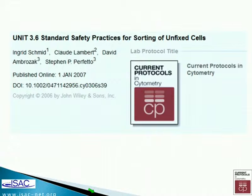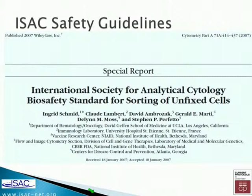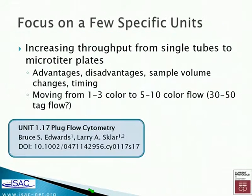Unit 3.6 is very detailed and includes a table identifying the level of safety required when sorting live human cells. You can also go to Cytometry Part A and read the special report published in 2007 based on that same protocol, which covers flow cytometry safety in great detail. If you're a technician or student in the lab, I encourage you to read these and make sure your laboratory is following the rules, because these are critical safety procedures.